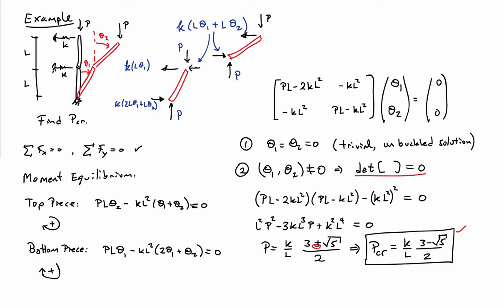To find the shape into which the system is going to buckle, I plug P_critical into the linear equations in place of P, then solve the system of equations for theta 1 and theta 2. That gives me the buckling shape of the system.